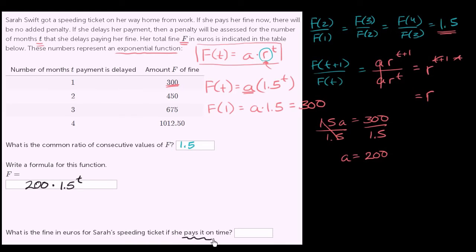Paying it on time implies that t is equal to zero. Or another way of thinking about it, we need to figure out her fine for t equals zero. So we need to figure out f of zero. It's 200 times 1.5 to the zero power. 1.5 to the zero power is 1, so that's just going to be equal to 200 euros.